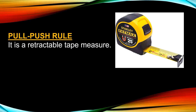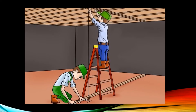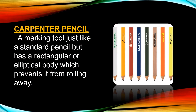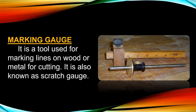Tools in carpentry. First is the pole push rule — the most common tool used to measure a quantity or distance, also called 'metro.' Next is the plumb bob — a heavy pointed tip suspended by a string which is used as a vertical reference line. It is used to identify the center of a construction or project. Of course, the carpenter's pencil is a marking tool used to mark the required measurements on a project. The marking gauge is a tool used for marking lines on woods or metal for cutting, also known as a scratch gauge.